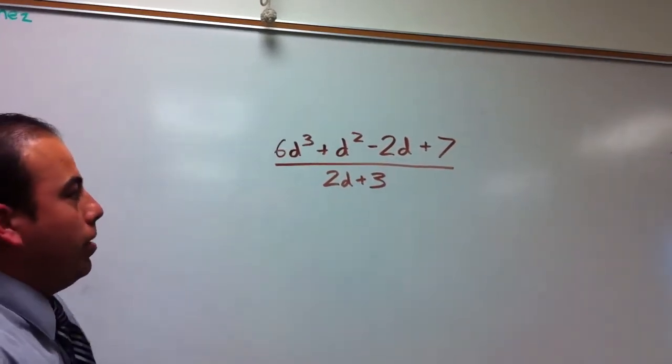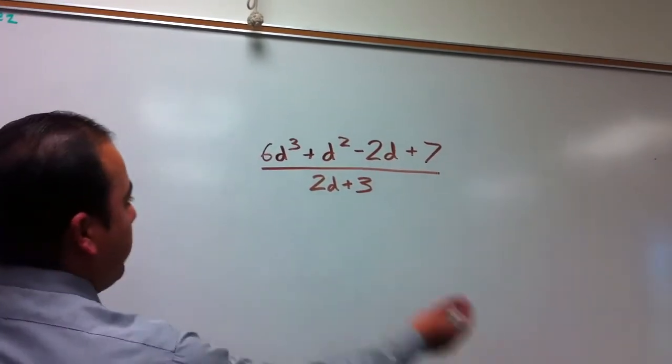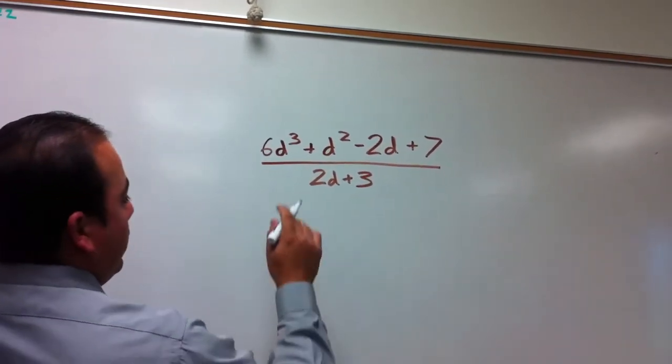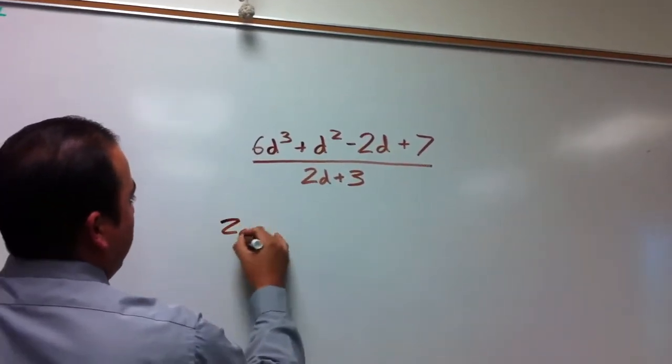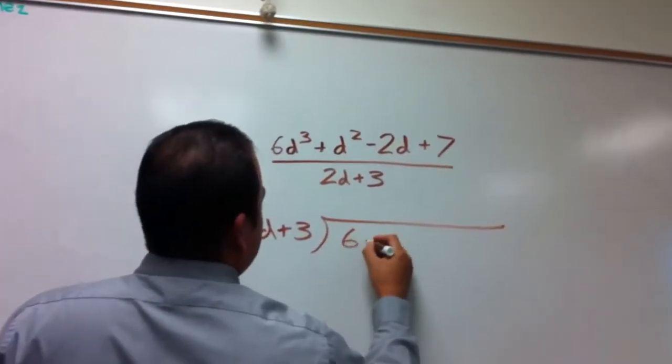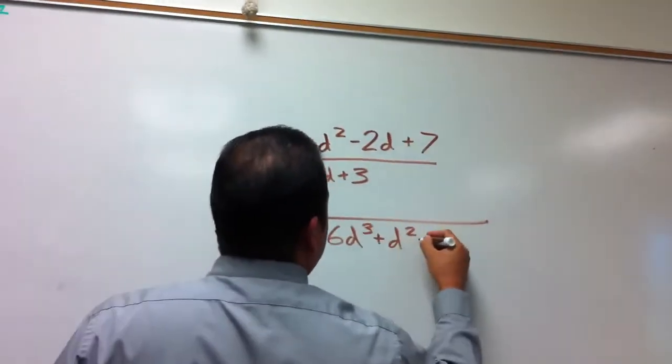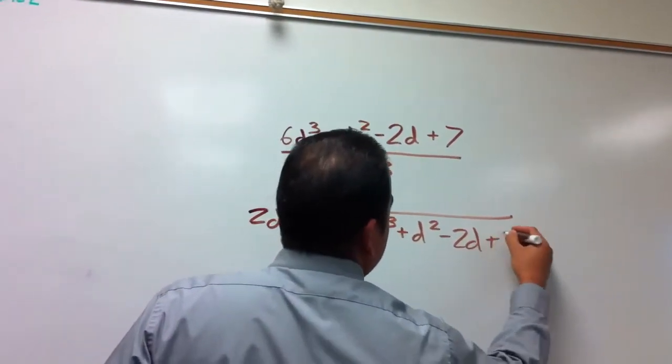For this problem, we're going to use long division. The first thing we need to do is put it in division box form. I'm going to put the denominator here, and the numerator over here: 6d³ + d² - 2d + 7.